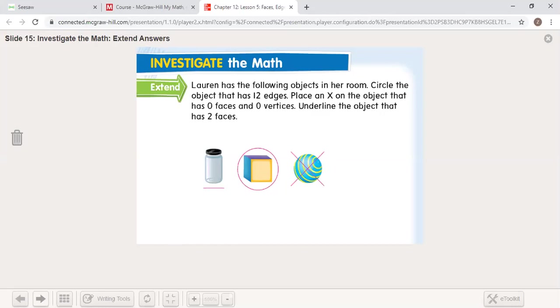So I would have put an X on the sphere, circled the cube because it has 12 edges, and I would have underlined the cylinder because it only has two faces. And faces are flat surfaces, flat sides.